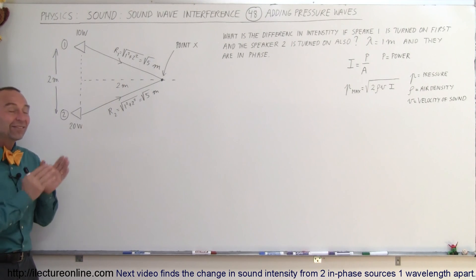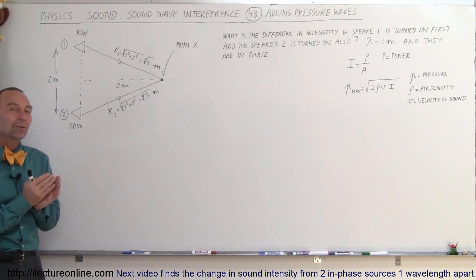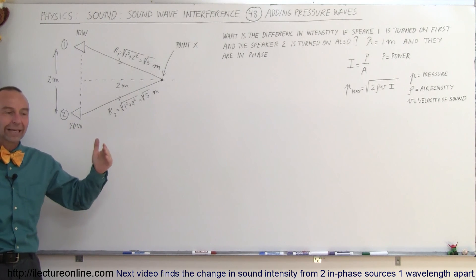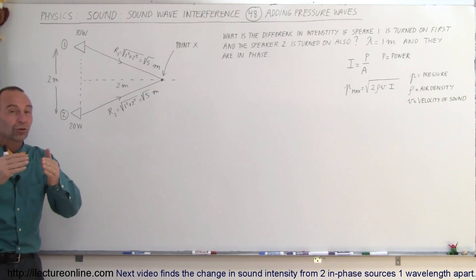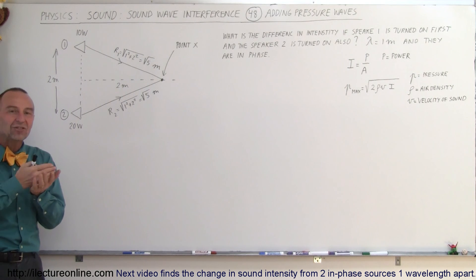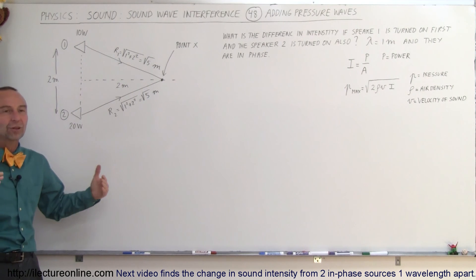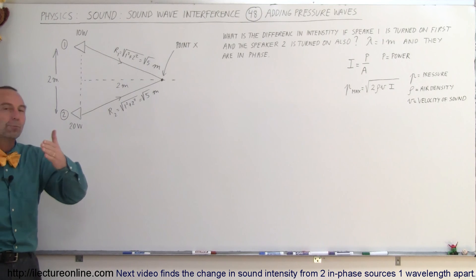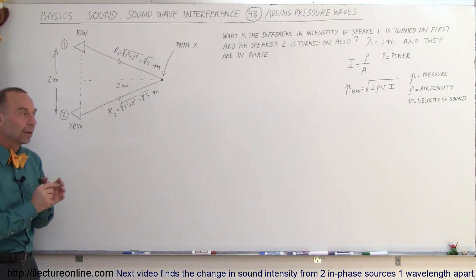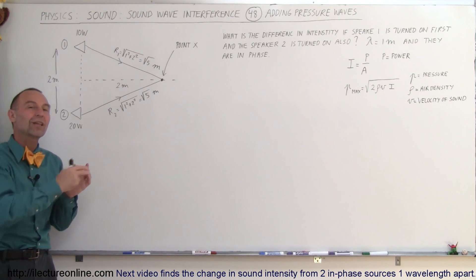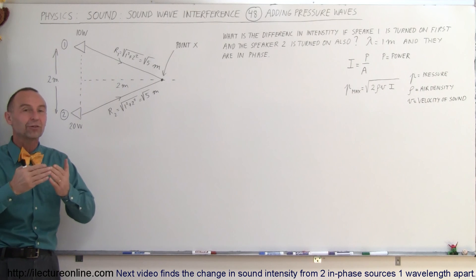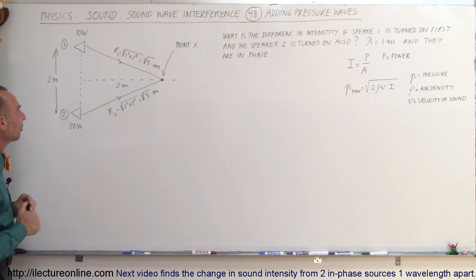Welcome to iLectronLine. In this example we're going to show you how to solve a problem where we have two sources of sound that come together to a single point, so there's going to be sound interference, and how to find the change in intensity depending upon whether there's one source or multiple sources. There's a special technique we have to use, and we'll show you this example and several more after.